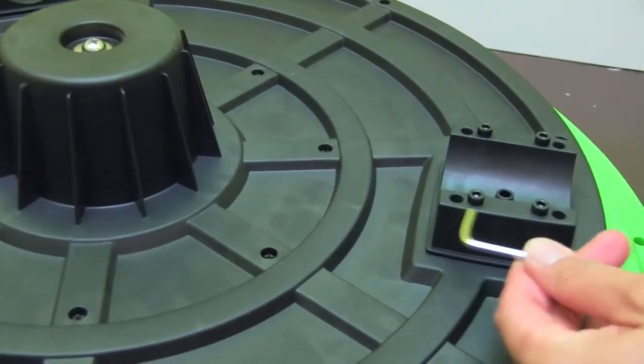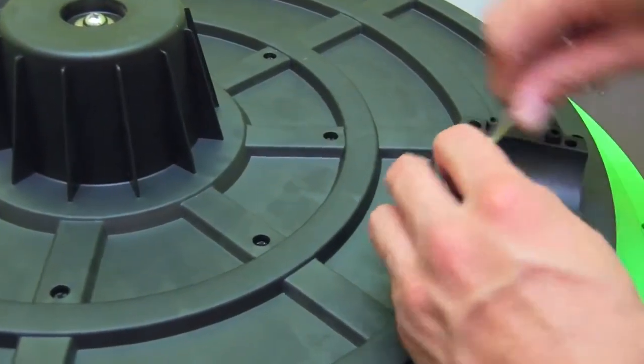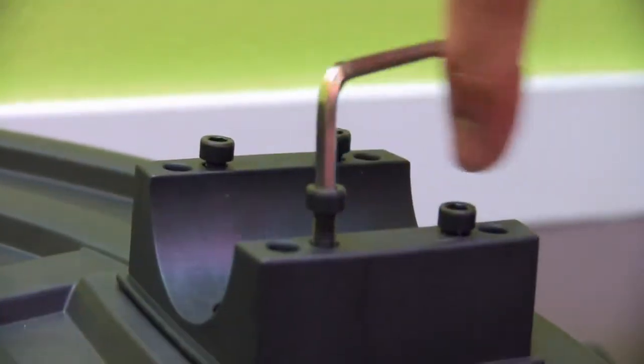Use a small allen wrench to remove a total of all four screws on the attached leg couplings. Repeat this step for the two other leg couplings.